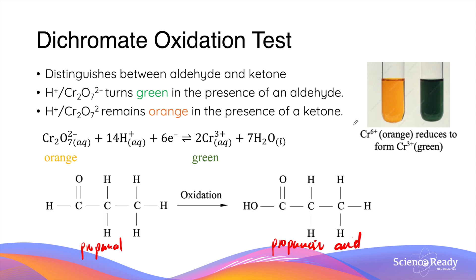Therefore, when we add acidified dichromate, which is originally orange in colour, to an aldehyde, it will be reduced to chromium ions, which are green in colour, so the solution turns green in the presence of an aldehyde. In contrast, if the same reagent is added to a ketone, it will remain orange as the ketone cannot be further oxidized. This test is a very simple and useful one, but it can only be conducted if we have excluded the possibility of an alcohol in the solution.